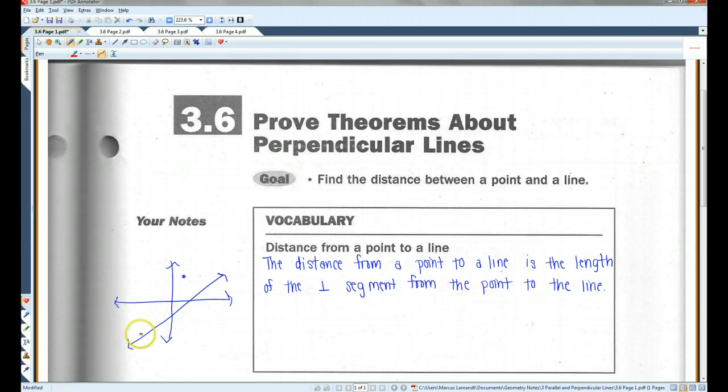So, for example, if you had a line like this, and some point not on the line, the distance from that point would be this segment here, the segment that is exactly perpendicular to the line.